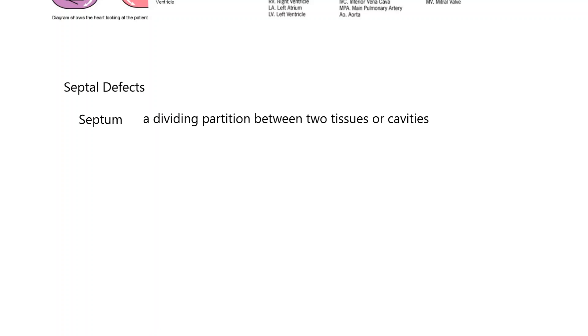The first heart-related disorder I'd like to talk about is called septal defects. We should know what a septum is because that's where 'septal' comes from. A septum is a dividing partition between two tissues or cavities. In this case, the cavities are the chambers of the heart.